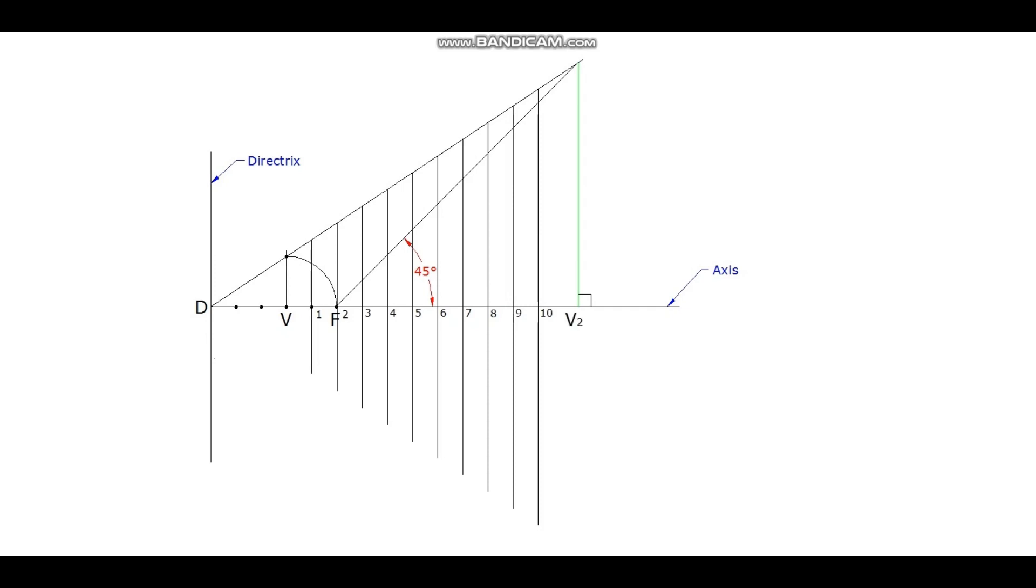Points 1 dash, 2 dash, 3 dash, etc. are marked on this inclined line corresponding to the points 1, 2, 3 of the axis.